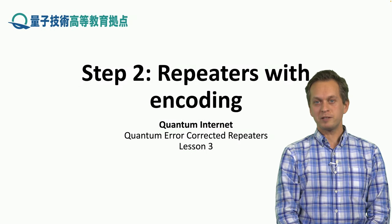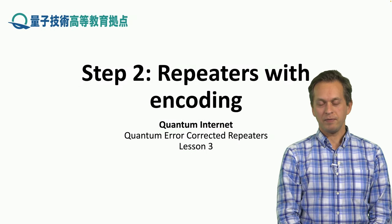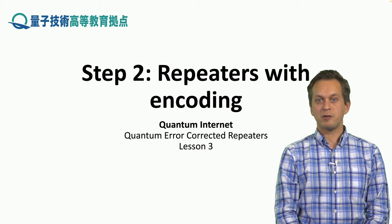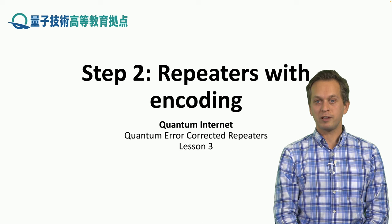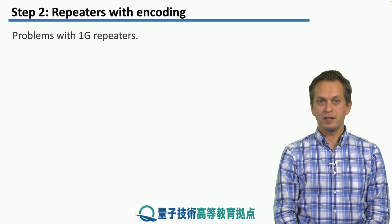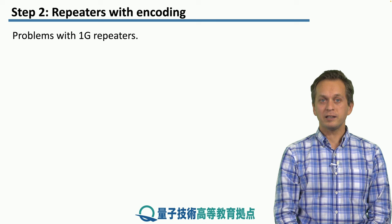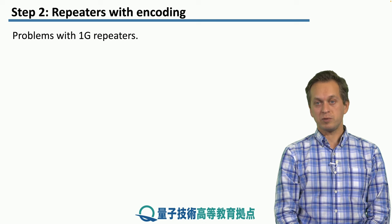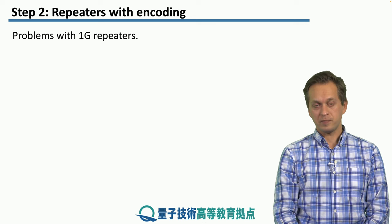Step 2: repeaters with encoding. In this step, we're going to discuss how we can use quantum error correction in the context of quantum communication. Before we do that, let's talk about what are the problems with 1G repeaters.